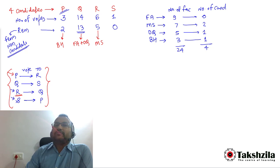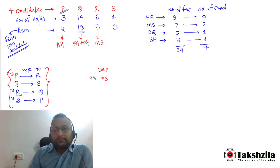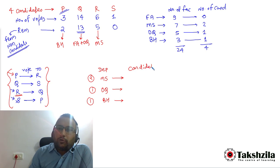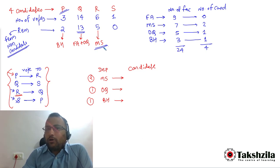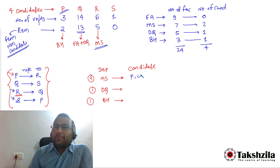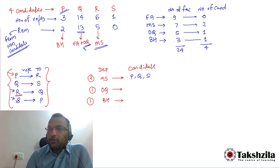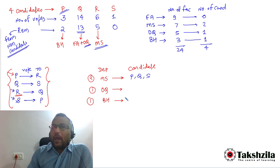Now let's identify which candidate is from which department. R received votes from department M&S — it means R does not belong to M&S. So the two M&S candidates are among P, Q, and S (not R). Q received votes from O&Q — meaning Q does not belong to O&Q. So the one O&Q candidate is among P, R, and S.